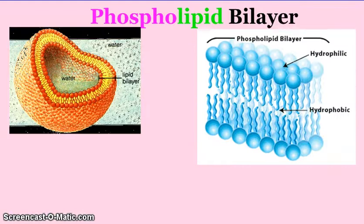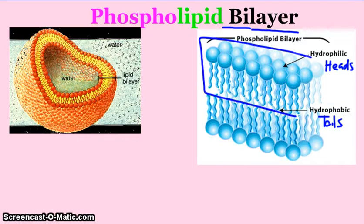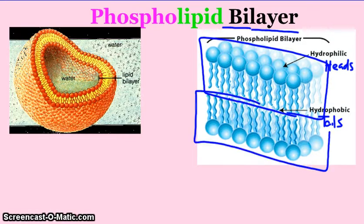First of all, I want to talk about the phospholipid bilayer. The phospholipid bilayer is the primary structure of the cell membrane. Everything else — all of those other pieces — are embedded into the phospholipid bilayer. It is composed of two parts: hydrophilic heads and hydrophobic tails. It's called a bilayer because 'bi' means two and 'layer' means layer — there are two layers, one here and another here, and each layer has its heads and its tails.